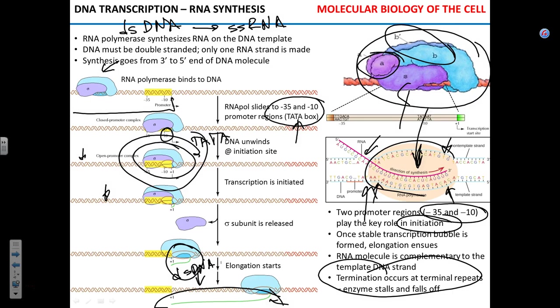This mechanism of transcription we've described is bacterial transcription. We're not going to talk about eukaryotic transcription in detail — eukaryotes like us have three different RNA polymerases and a large number of regulatory factors. Unless you're going to do molecular biology later in life, it's not necessary to know the details.